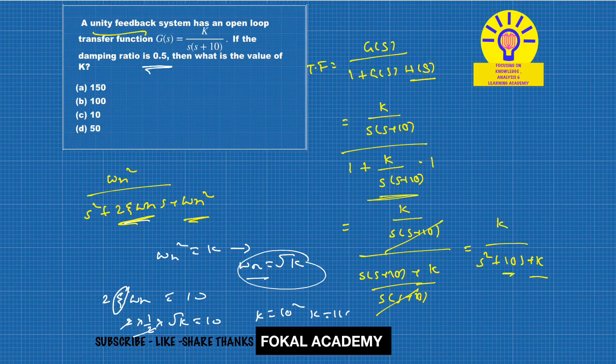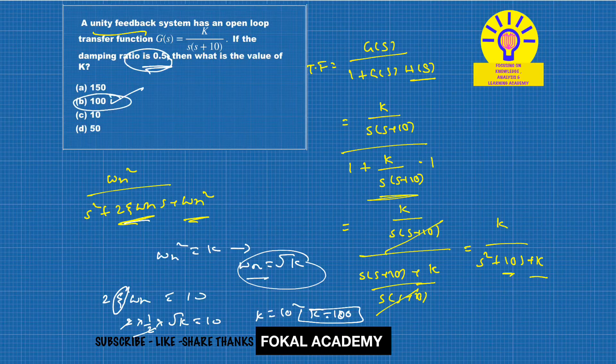From the options, the k value is 100, so option B is the correct option. When the damping ratio is 0.5 for the given system, the k value is 100. Thanks for watching, please subscribe to my channel.